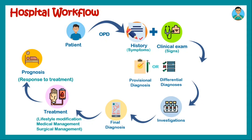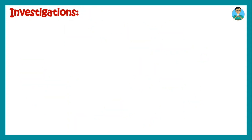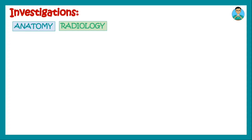In this entire workflow, the most daunting decision is which investigations to order. Investigations can be classified in different ways. One way is based on the subjects you study in medical school. Starting from anatomy — anatomical investigations include radiology, for example, USG, MRI, CT scan, X-rays, and so on.